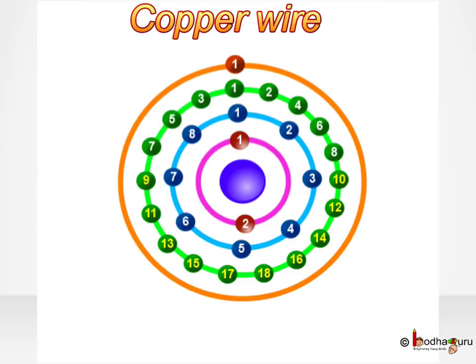Each atom constitutes positively charged particles called protons and uncharged particles called neutrons inside the nucleus of the atom, and the negatively charged electrons are moving around the nucleus in different shells.